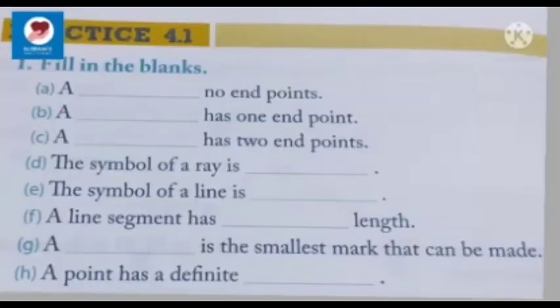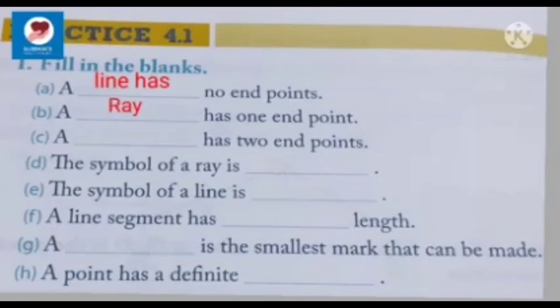Children, there are some questions for you. Answer the following: A dash has no endpoints — a line has no endpoints. A dash has one endpoint — a ray has one endpoint. A dash has two endpoints — a line segment has two endpoints.